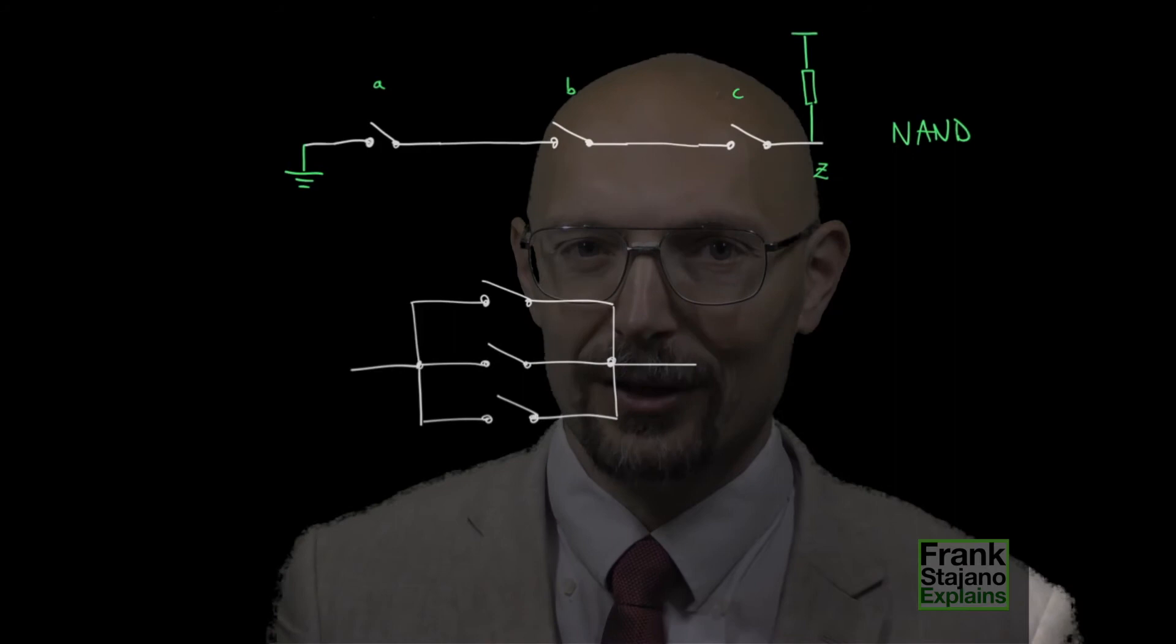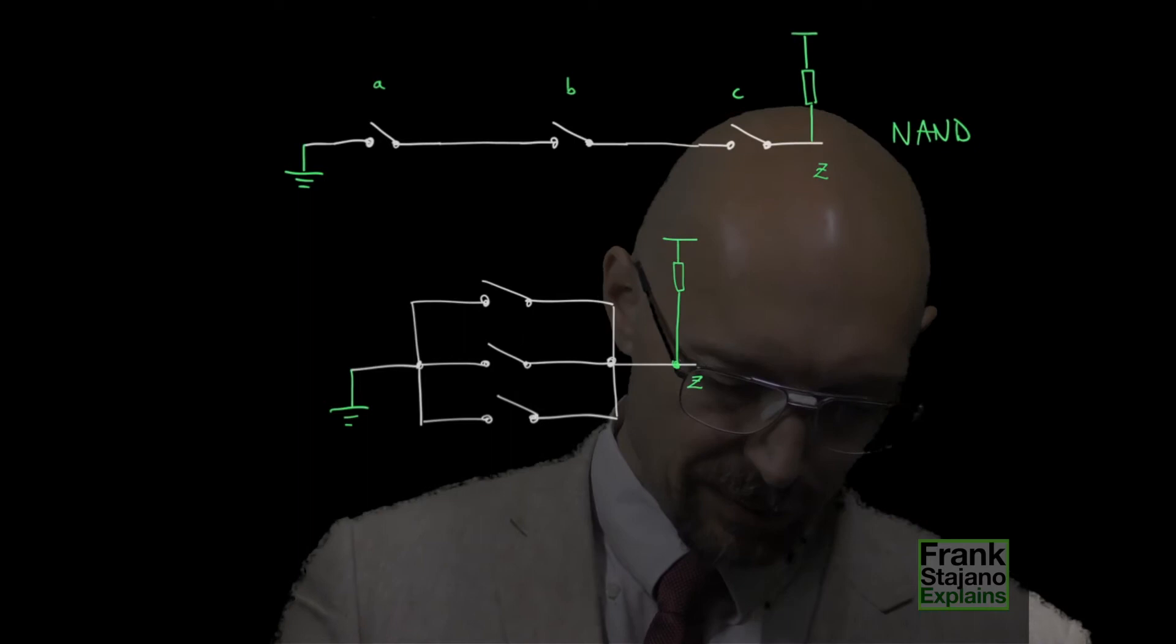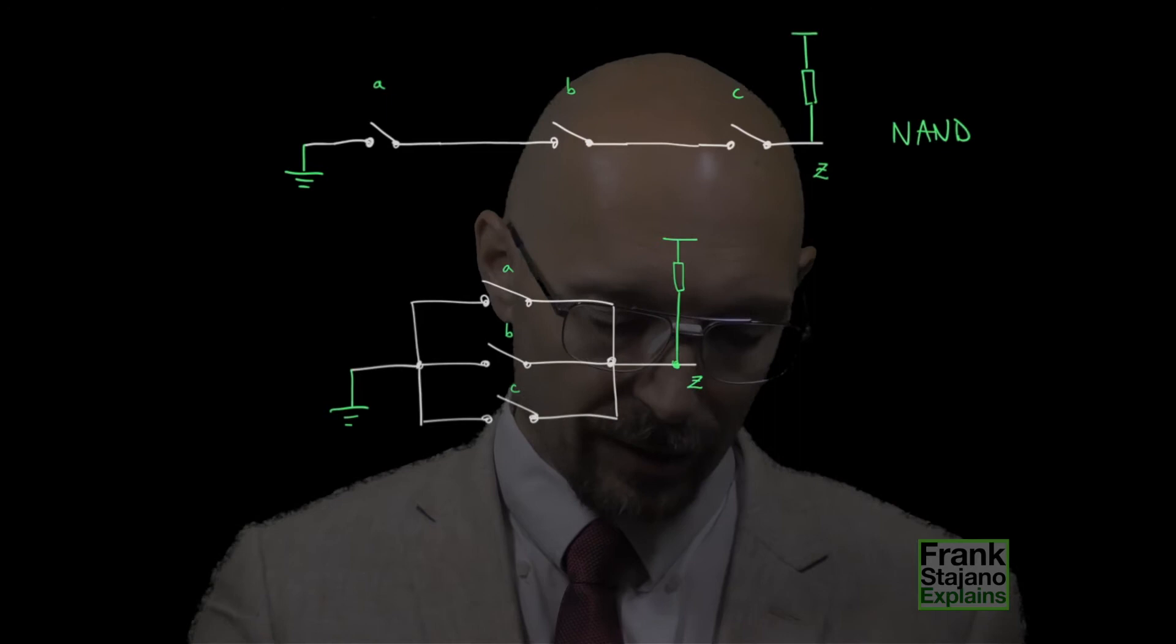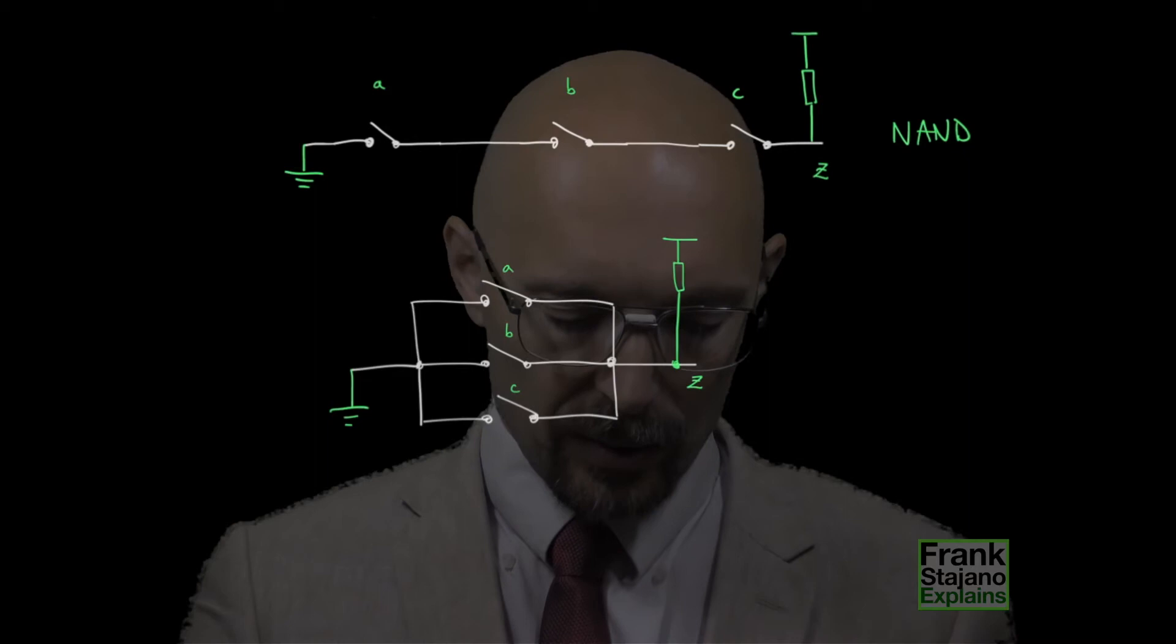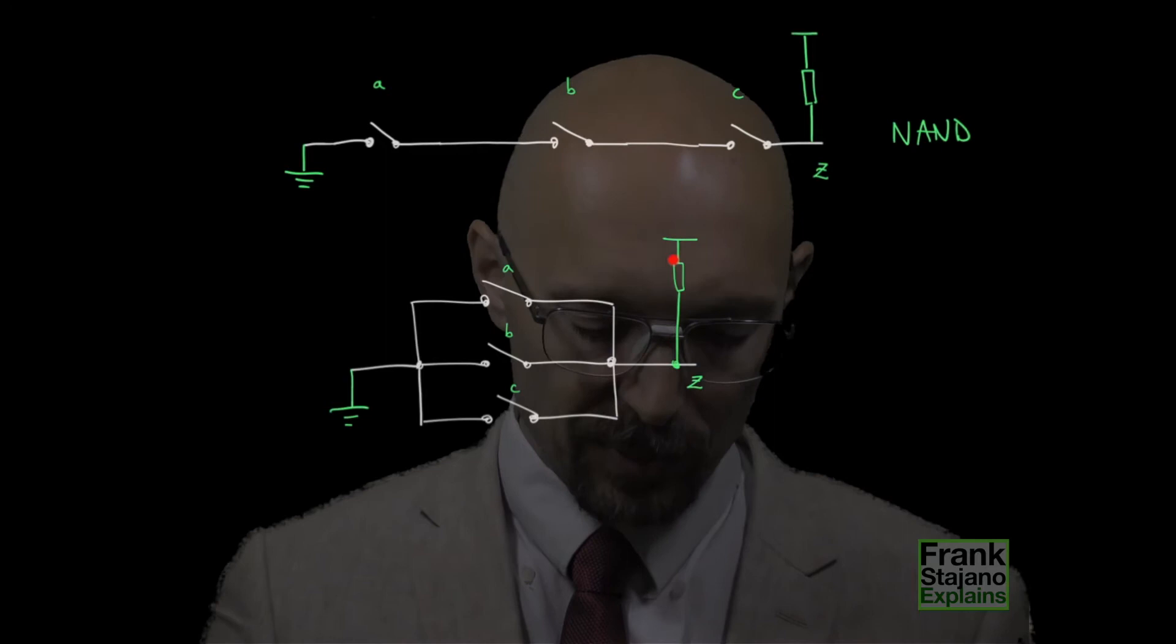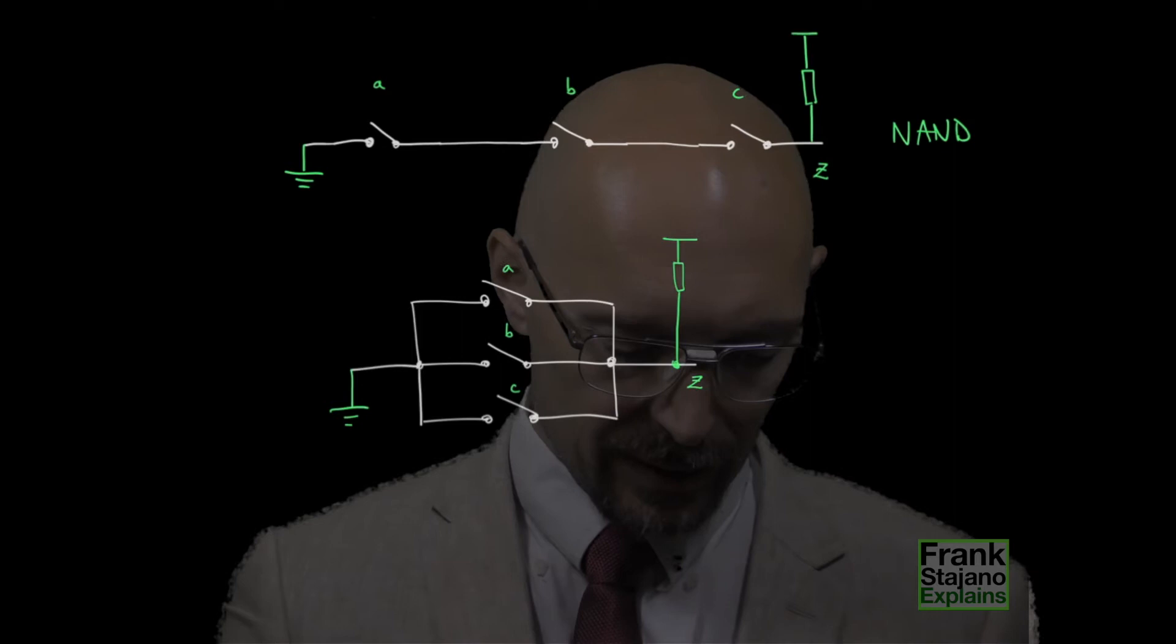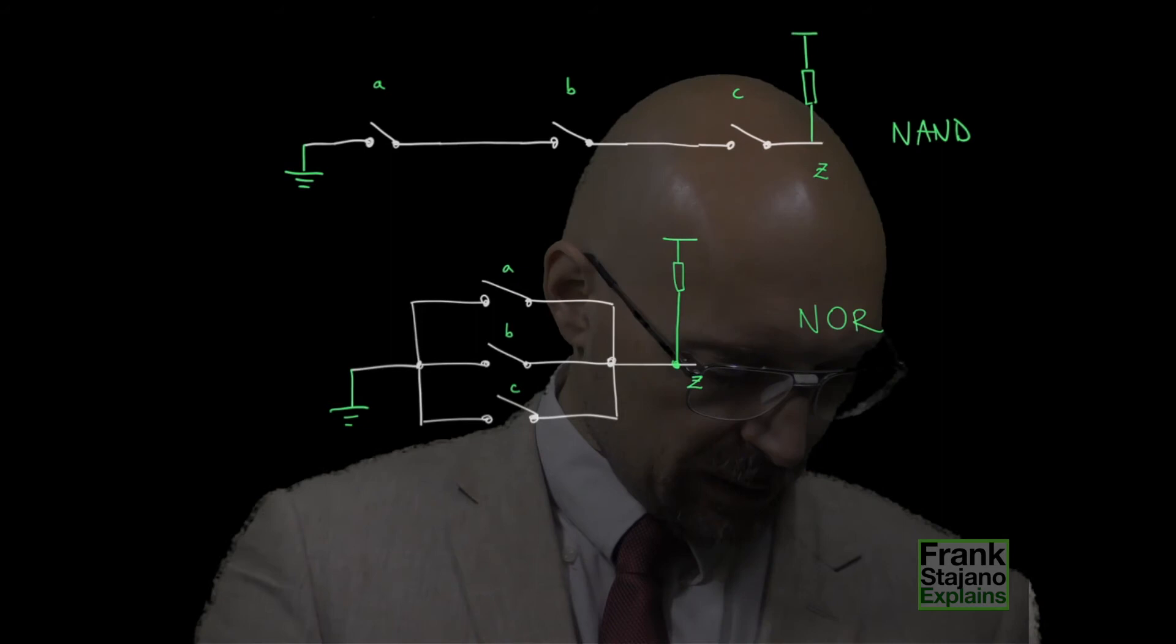Let's check if this works with OR as well. We touch one end of the parallel of switches to ground and we pull up the other end, which is our output, to the power supply with a pull-up resistor. So, now we see that our output will be short-circuited to ground as soon as any of the inputs is connected. If any of the inputs is 1, then the output will be 0. Whereas, only when all the inputs are 0 and all these switches are disconnected, then this will be left disconnected from this and will be pulled up to the power supply to logic 1. So, we have all zeros give 1 and all other combinations of inputs give 0.